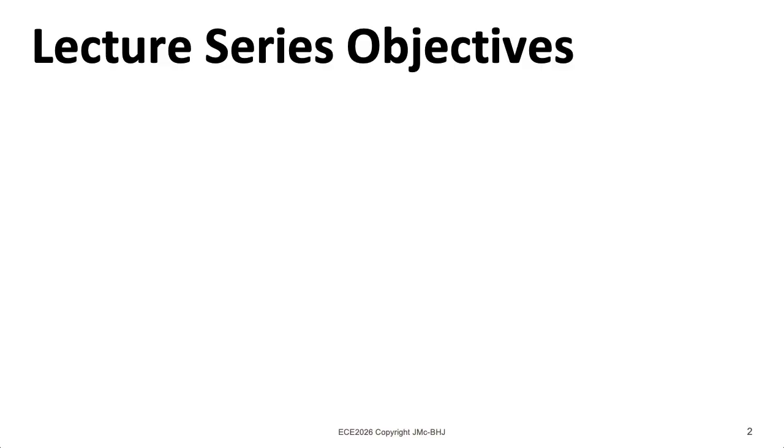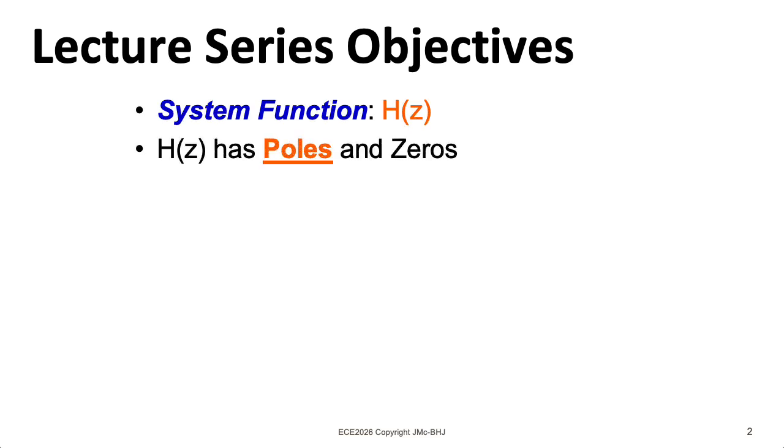We'll describe IIR filters in terms of their system function. In particular, the poles that were not terribly important for FIR filters because they're all at the origin for finite impulse response filters play an essential role in the behavior of infinite impulse response filters.